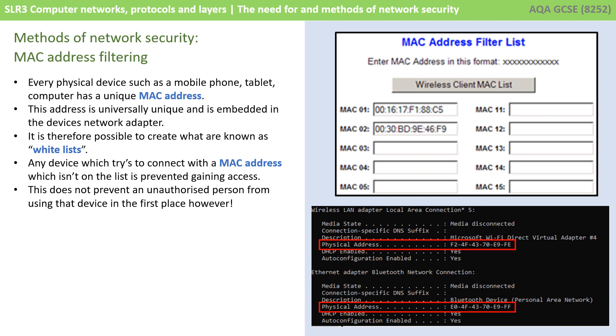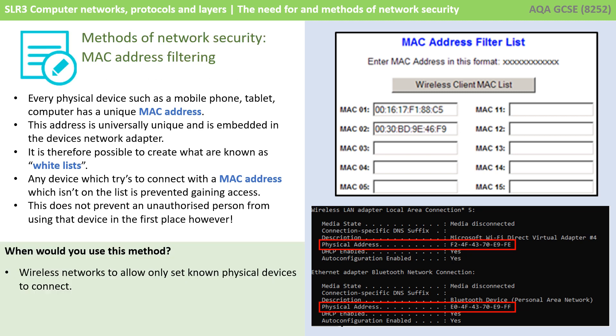This does not prevent an unauthorised person from using a device that's already on the whitelist, but it does prevent them from using any device that's not on the whitelist from gaining access to your network. Wireless networks are quite a common use case, as it allows only a set number of physical devices to connect to a wireless network, and not anybody who happens to be in range.